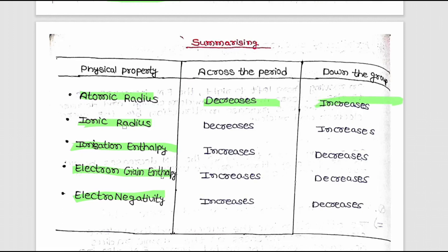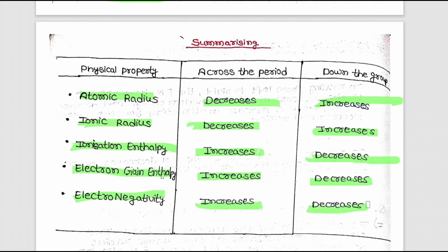Ionic radius decreases across a period while increasing down the group. Ionization enthalpy increases across the period. Electron gain enthalpy increases across a period and down the group.